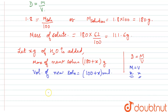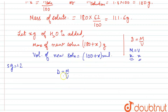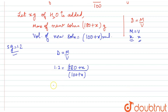To attain a specific gravity of 1.2, we set up the equation: density of new solution equals 1.2, so 1.2 = (180 + x) / (100 + x). Cross-multiplying gives: 120 + 1.2x = 180 + x.